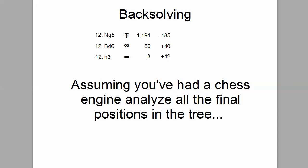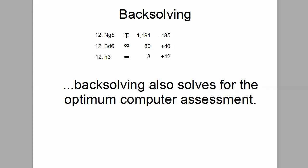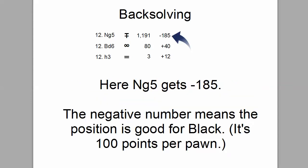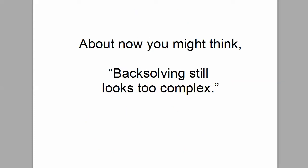Assuming you've had a chess engine analyze all the final positions in the tree, backsolving also solves for the optimum computer assessment. Here, Knight G5 gets negative 185. The negative number means that the position is good for black — it's 100 points per pawn. And now you might be thinking, backsolving still looks too complex.